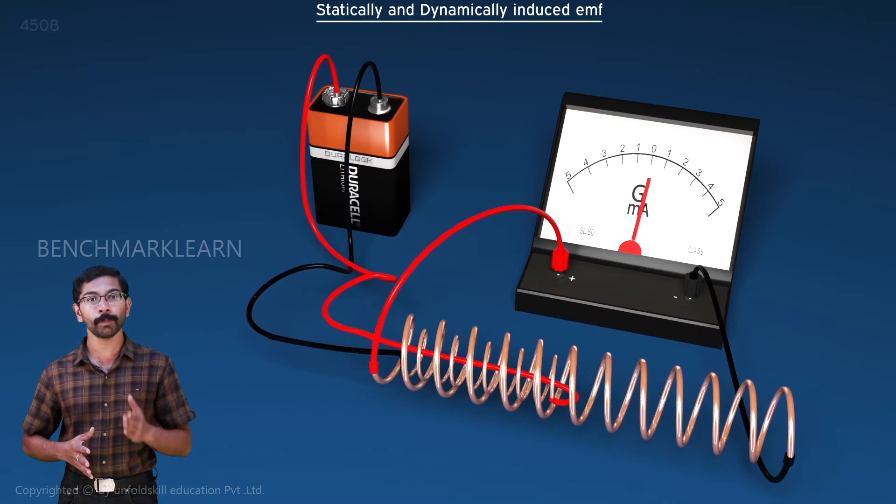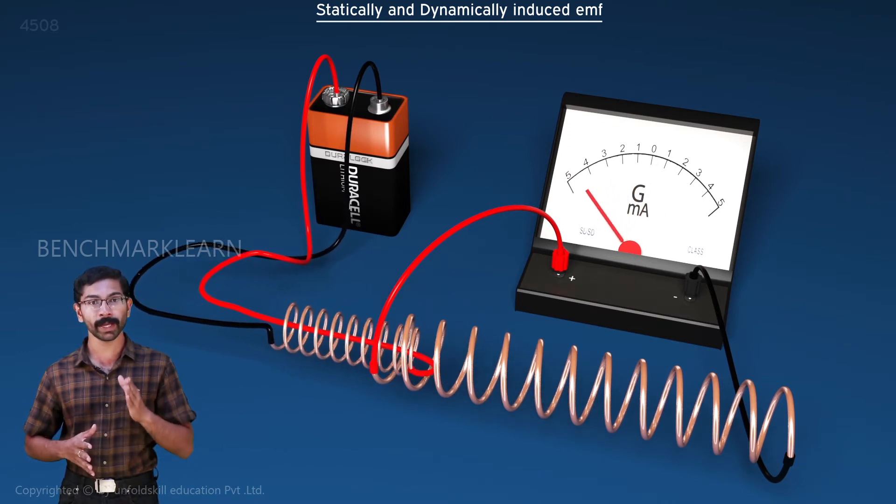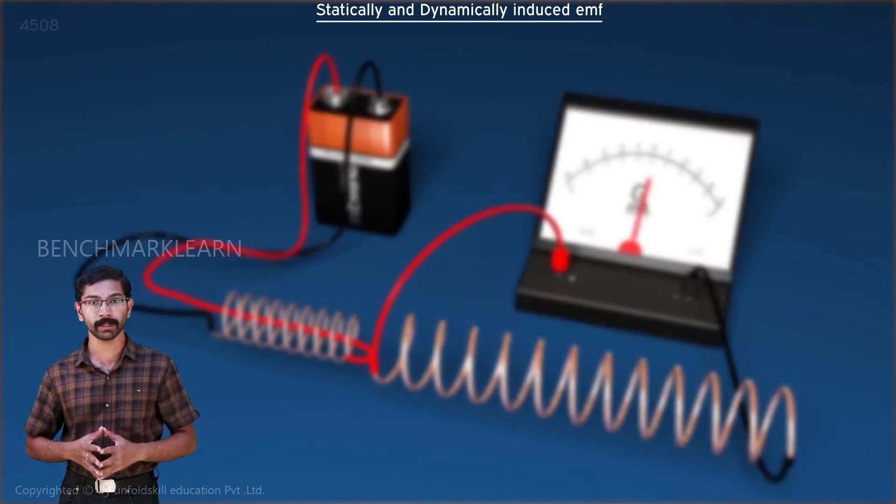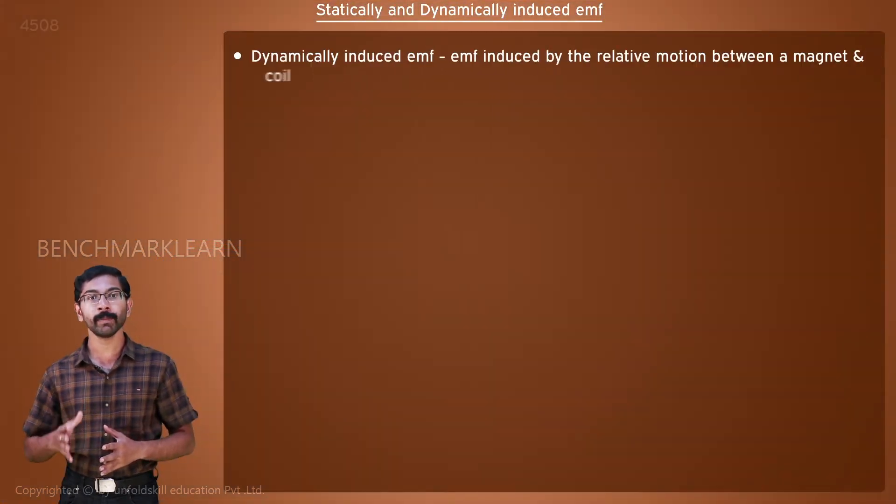We could obtain similar results if we kept the electromagnet stationary and moved the bigger coil around the electromagnet. Here, the EMF is induced because there is a relative motion between the two coils. The EMF thus induced is called a dynamically induced EMF.